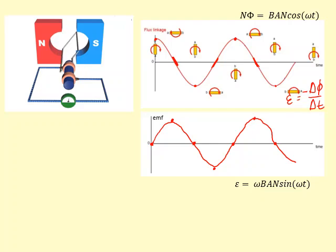The maximum value that sine omega t can take is one, so when that's one, this omega BAN represents the maximum EMF.